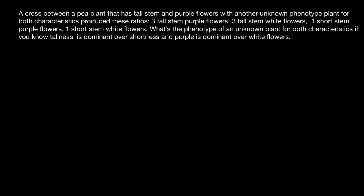What ratios do we have here in the progeny? We have two traits: color and tallness of the plant. We have three tall, another three tall, one short, and another one short. So three plus three is six, and one plus one is two — a six to two ratio, which is the same as a three to one ratio.